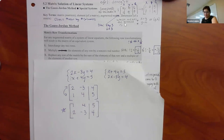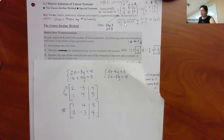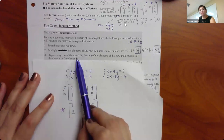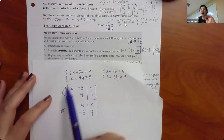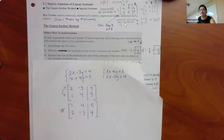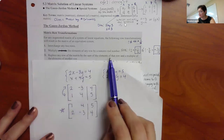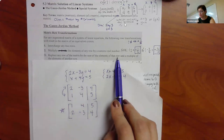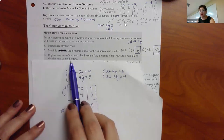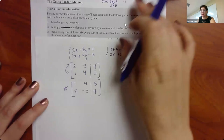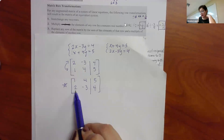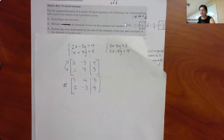The last operation — and this one's a bit more confusing — is that you can replace any row in your matrix by the sum of the elements of that row and a multiple of the elements in another row. It's very important to understand this language: which row is getting replaced? The row getting replaced is NOT the one that has a multiplier. It's the one that is NOT being multiplied that gets replaced.